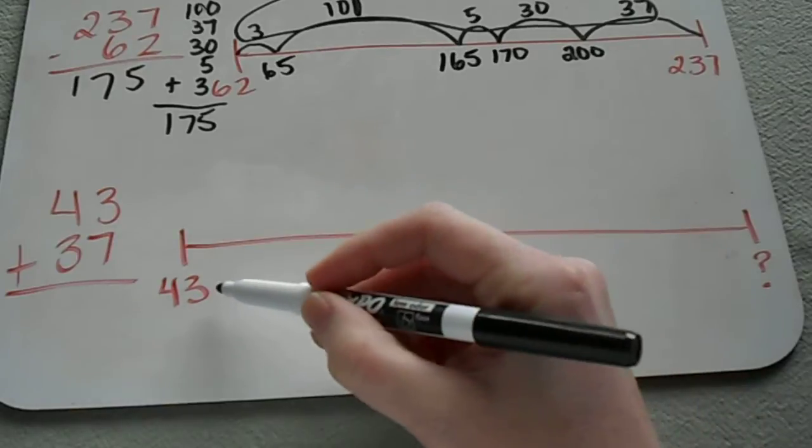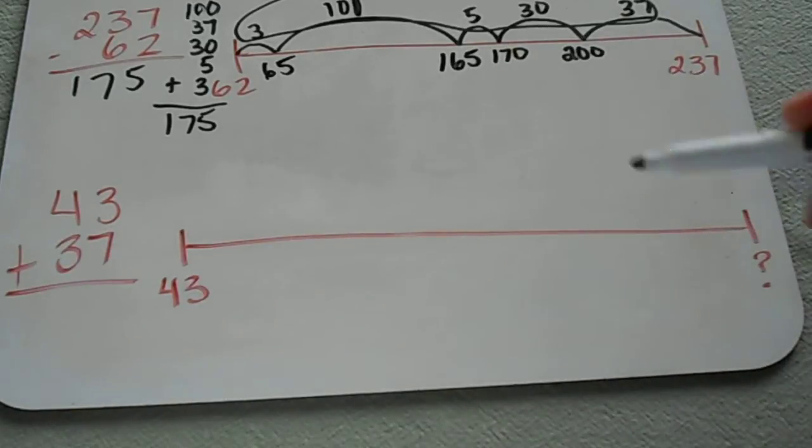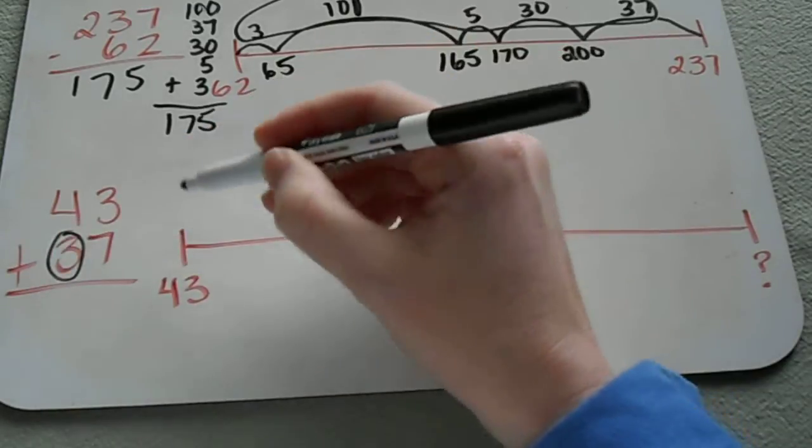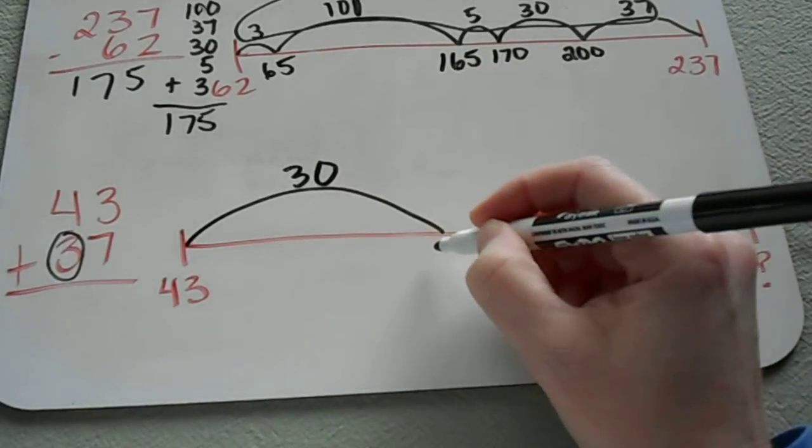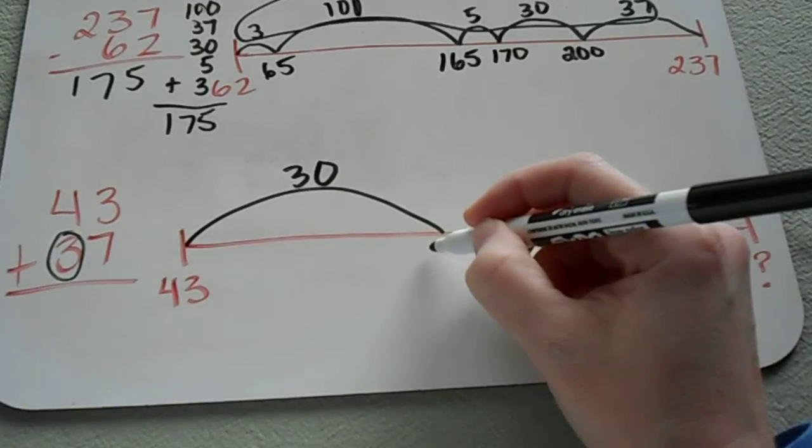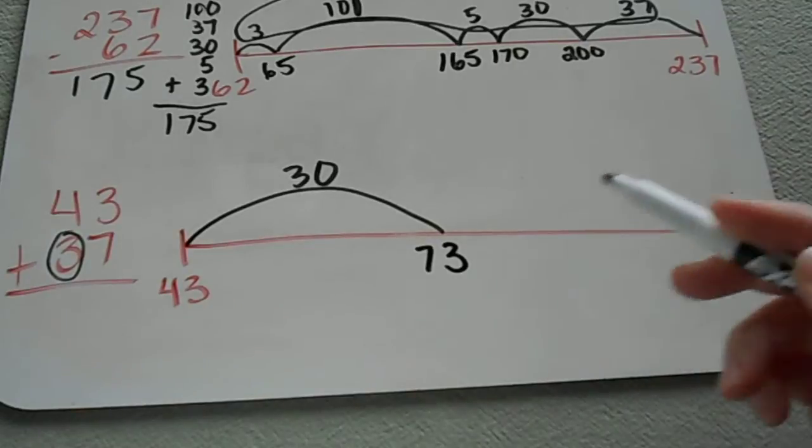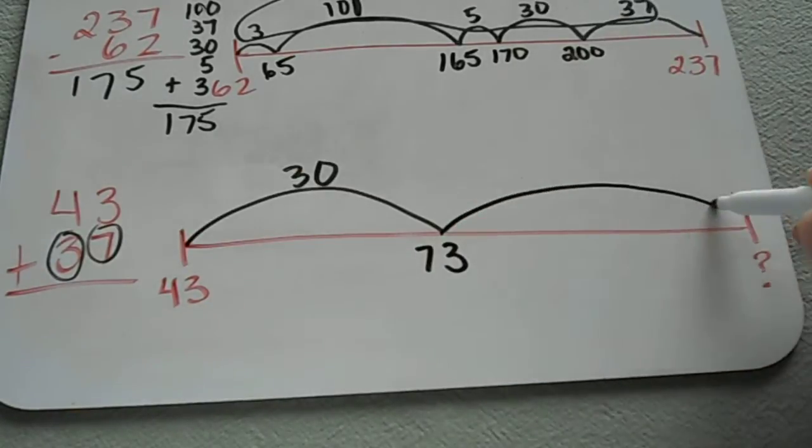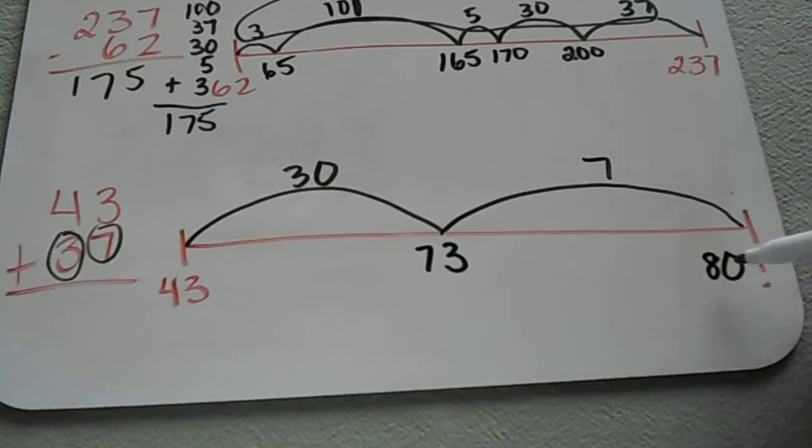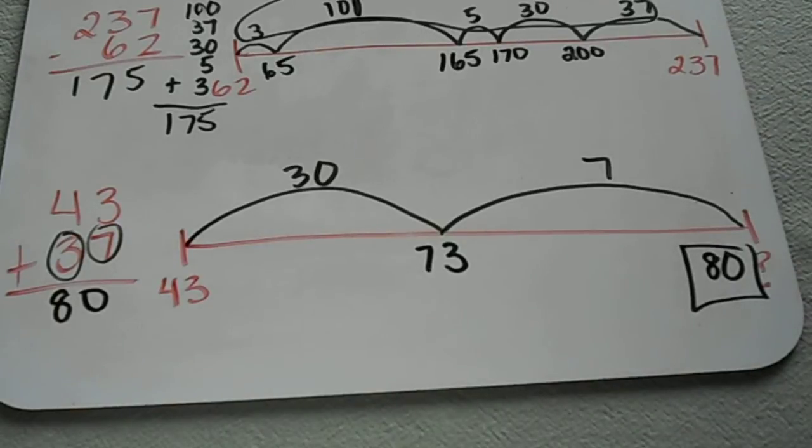So when I start at 43, I can use parts of this bottom number to tell me how many jumps to make. So this is a pretty easy one. I'm going to start at 43 and I'm just going to jump 30 units. So I know 30 units plus 43 units, that's just something that I can do in my head and most students can do in their head when they're learning this type of math. So that puts me at 73. And then I need to add in my ones. So 73 plus 7 more units is 80. So I know that my total is 80. So that's just one way to do addition with open number line.